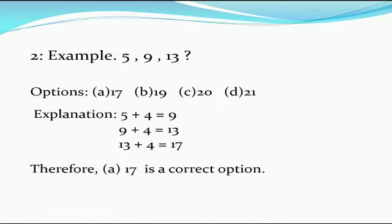Options are A, 17, B, 19, C, 20 and D, 21. Look at the first number 5. 5 plus 4, you get 9. And again, 9 plus 4, you get 13. And again, 13 plus 4, you get 17. So, your correct option is A and your answer is 17.